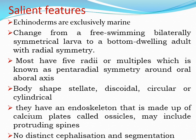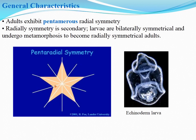You cannot call it a head, but we refer to it as the oral end. There is no segmentation in Echinodermata. The symmetry is pentamerous radial symmetry with five angles. The larva undergoes metamorphosis to become a radially symmetrical adult.